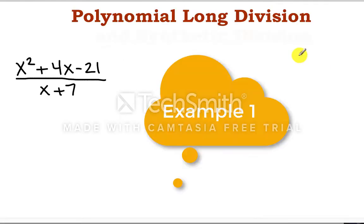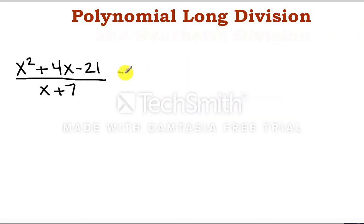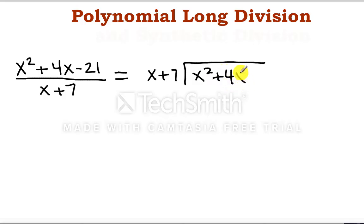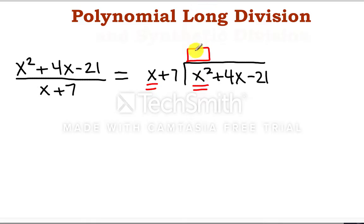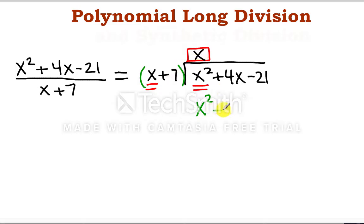So now let's see an example actually using polynomials. Suppose we want to divide x squared plus 4x minus 21 by the quantity x plus 7. We set this up the same way: x plus 7 on the outside and x squared plus 4x minus 21 on the inside. We start with the first term x and ask ourselves what we need to multiply by to get x squared. x times what gives me x squared? The answer is x. So we multiply by the entire quantity x plus 7 — x times x, x times 7 — giving us x squared and 7x.